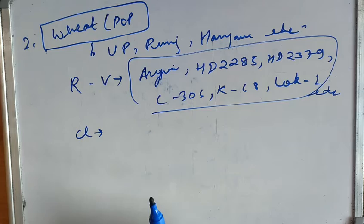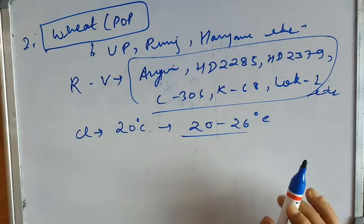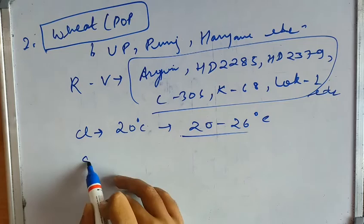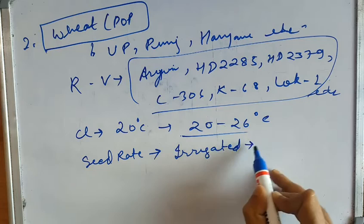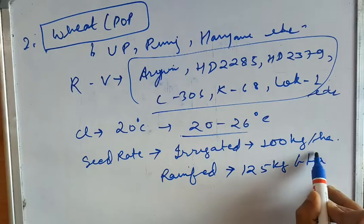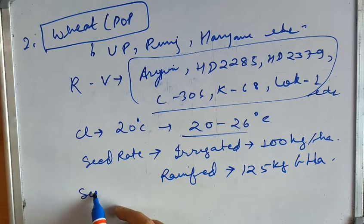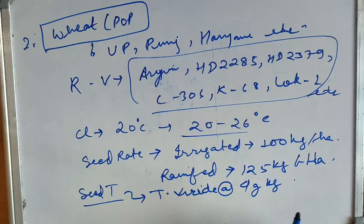Wheat requires an ideal temperature of around 20 to 22.6 degrees Celsius for normal climatic conditions. For seed rate, under irrigated conditions it requires around 100 kg per hectare, and for rainfed conditions around 125 kg per hectare. For seed treatment, we use Thiram at 4 grams per kg, or Carboxin at 1.25 grams per kg of seed.